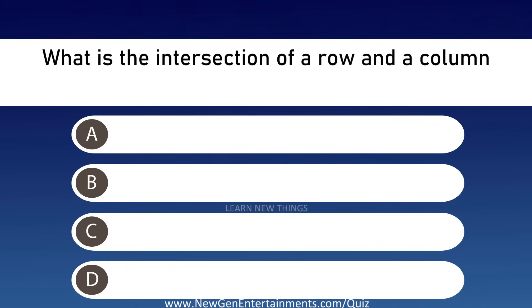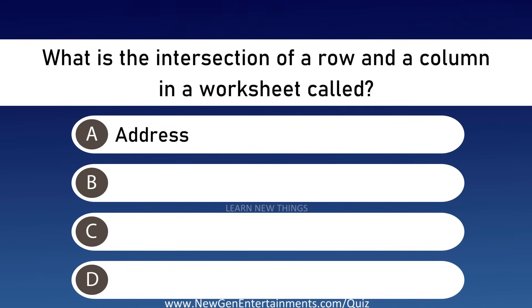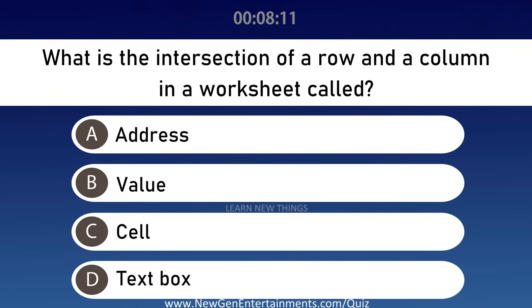What is the intersection of a row and a column in a worksheet called? Options are A: Address, B: Value, C: Cell, and D: Textbox. Answer is Option C, Cell.